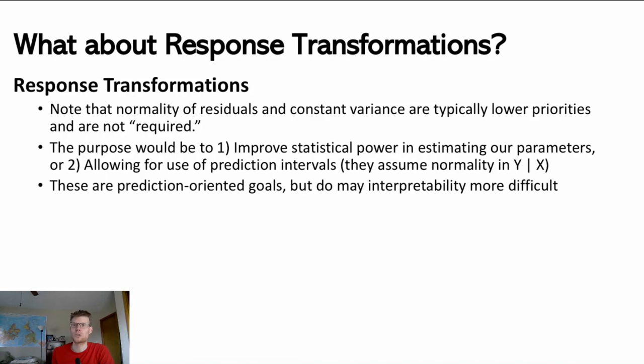The reason that we value having normal residuals and constant variance is for purpose of both statistical power in estimating the parameters as well as being able to use something like a prediction interval because prediction intervals assume normality of Y given a particular set of predictor values. So if we want to be able to make those assumptions, then this is helpful. But they're not necessarily priorities - it's not necessarily wrong or bad if these things aren't true.